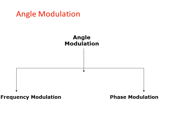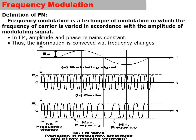Angle modulation has two types: frequency modulation, which we call FM modulation, and phase modulation. Frequency modulation is a technique of modulation in which the frequency of the carrier is varied in accordance with the amplitude of the modulating signal. In FM modulation, amplitude and phase remain constant, and information is conveyed through frequency changes only.